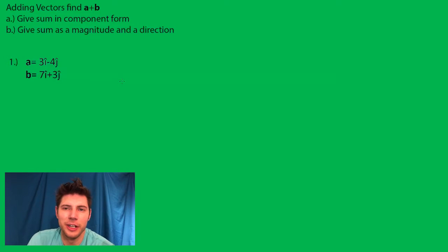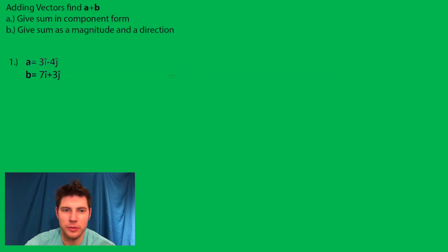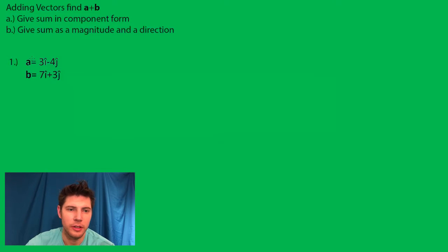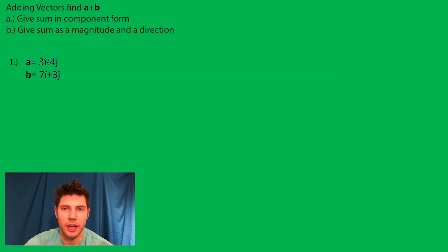Hey guys, now we're going to add up some vectors. The first one is asking for it in component form. This right here is component form — you have 3i's and 4j's. When adding vectors, all you do is just add the corresponding component.